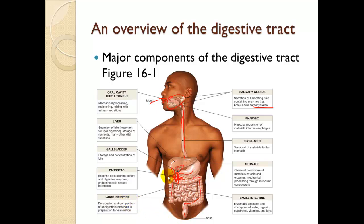In the small intestine, there is enzymatic digestion and absorption of water, organic substrates, and vitamins — a lot is happening there. Once we make it to the large intestine, this is our last opportunity to pull water from the system.